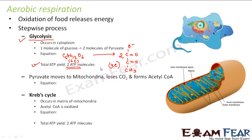Now what happens to this pyruvate? The pyruvate, which was created in the cytoplasm, will now move to the mitochondria — the powerhouse of the cell, the cell organelle where energy generation takes place. In the mitochondria, it will lose carbon dioxide and thereby form acetyl coenzyme A.